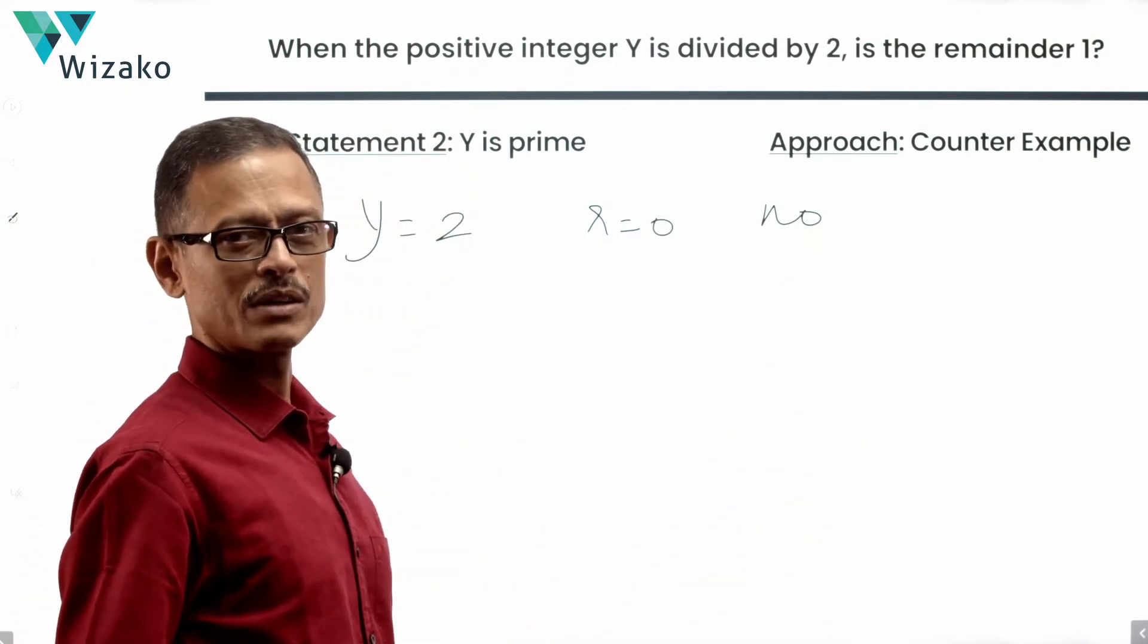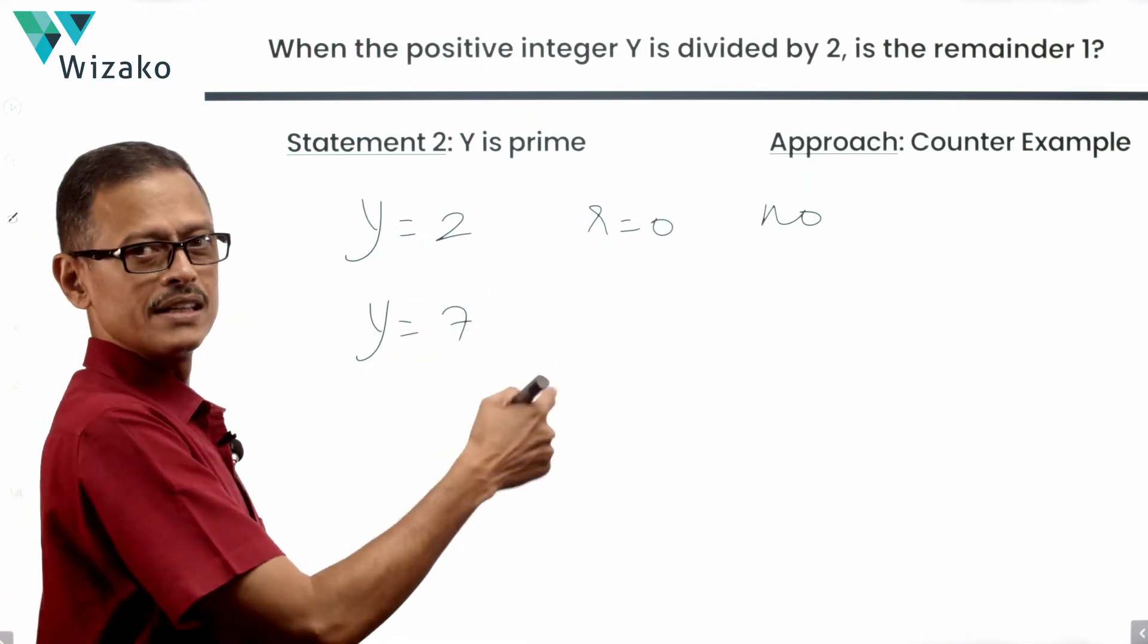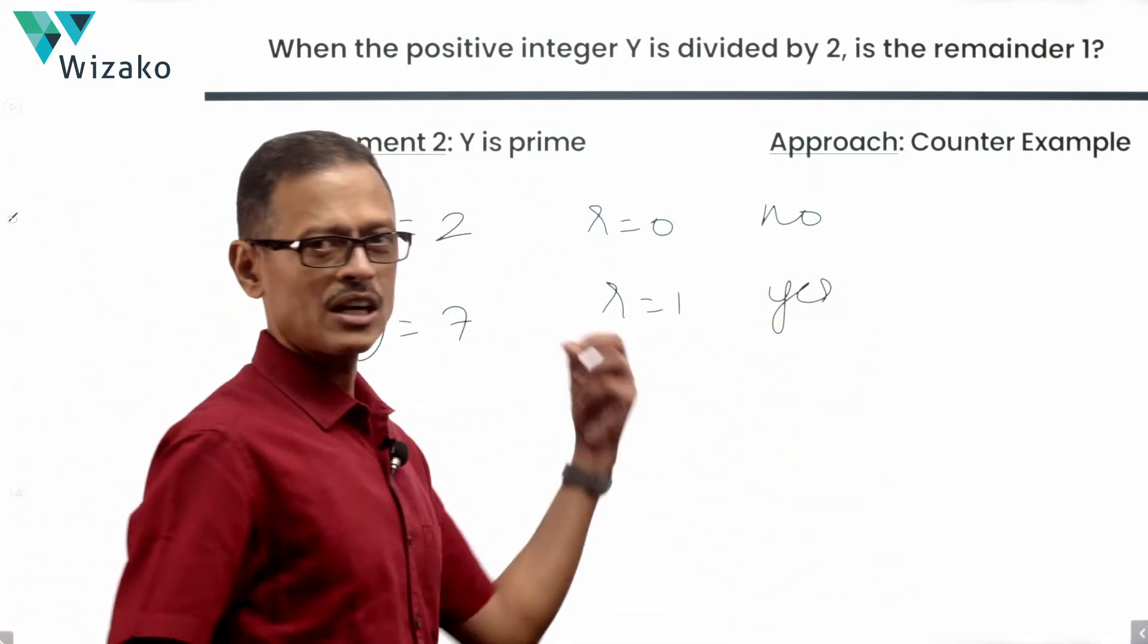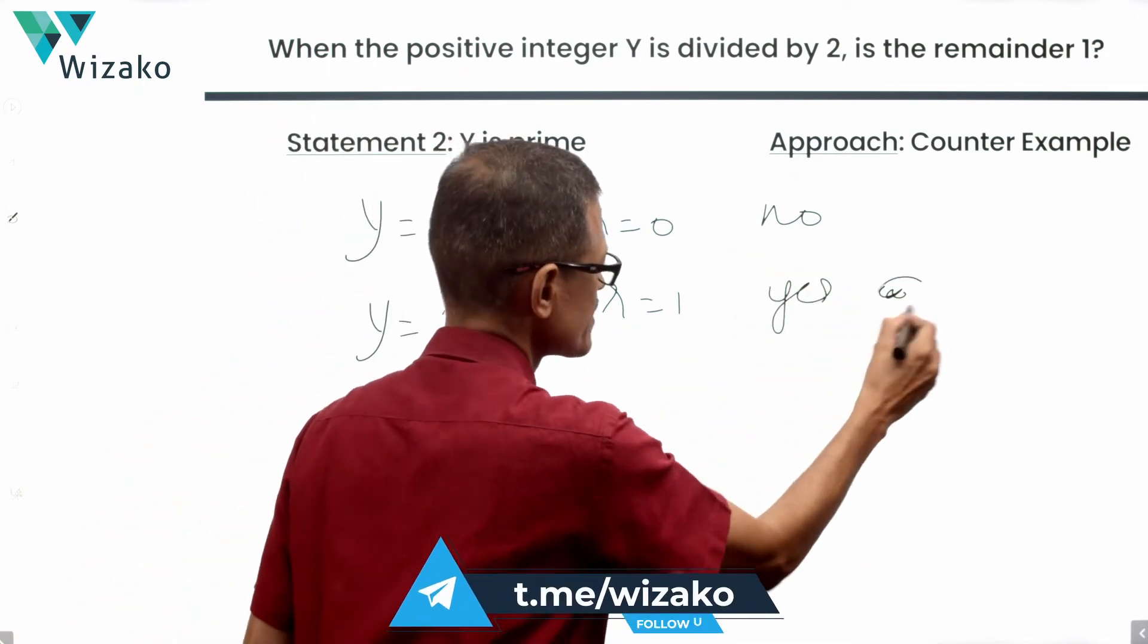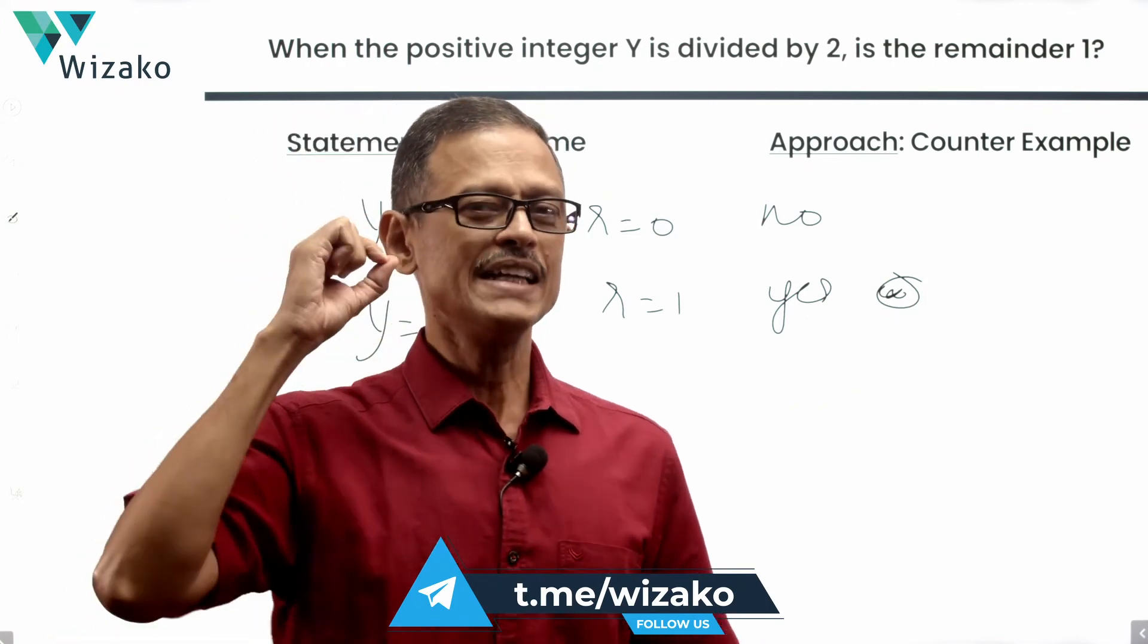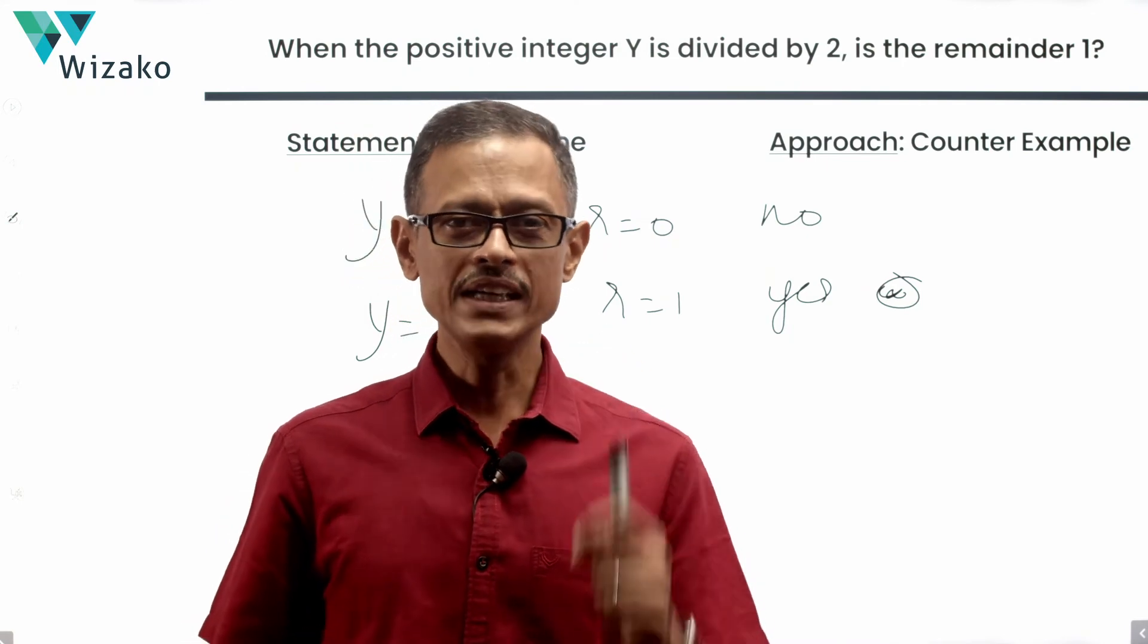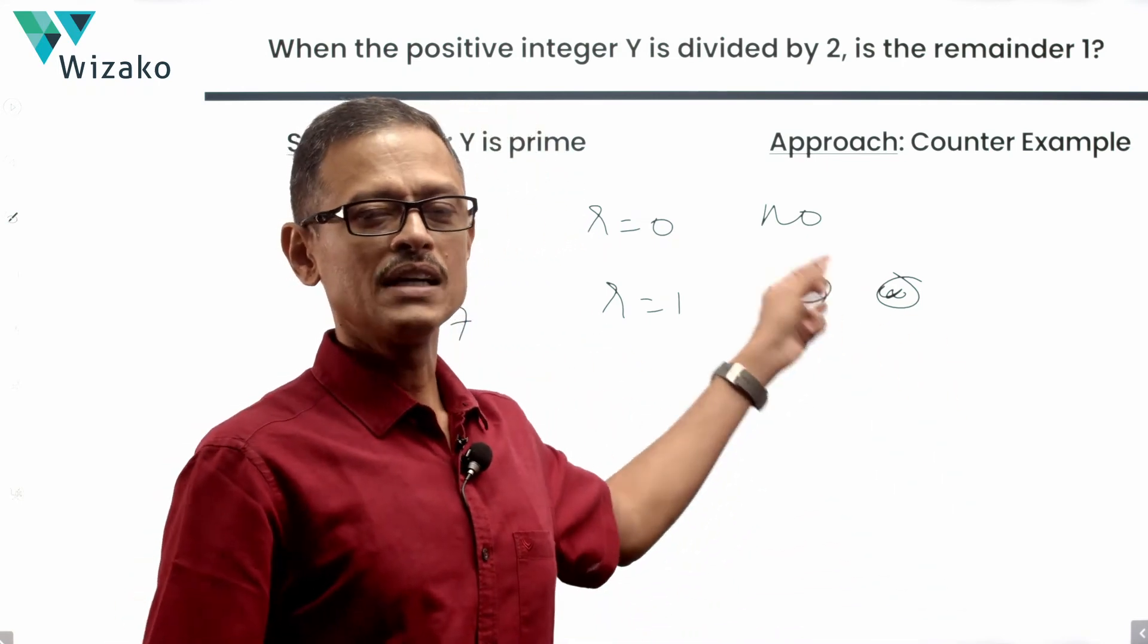For any other prime number value that Y takes, if Y is equal to 7, it's an odd number divided by 2, the remainder is equal to 1. The answer is yes. So we have a counter example. In infinite scenarios, it's going to be yes. In infinite scenarios, every time Y is a prime number, it is going to be an odd number, except one single case when Y is equal to 2. That's the only even prime and the first and the smallest prime. So that gives us a no.